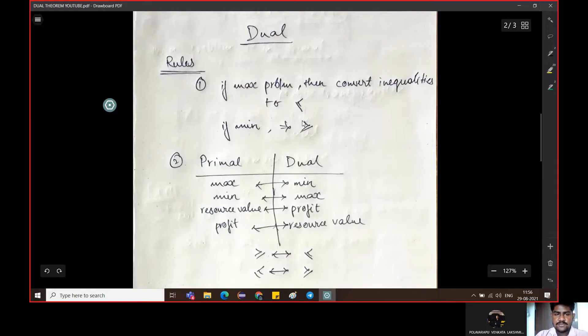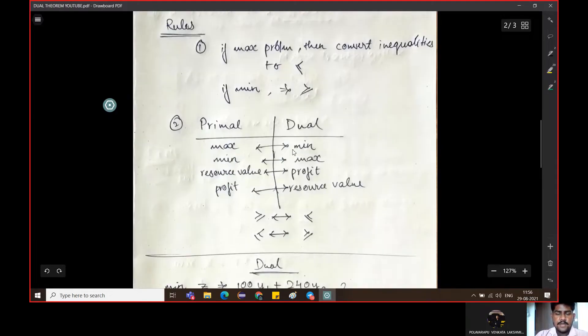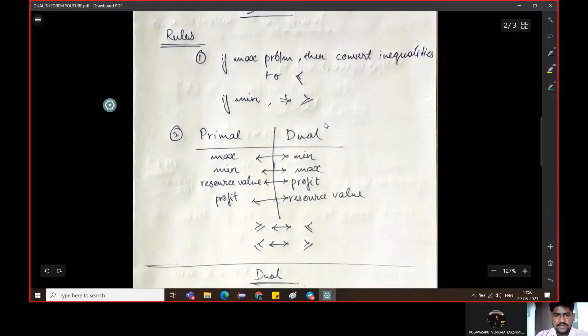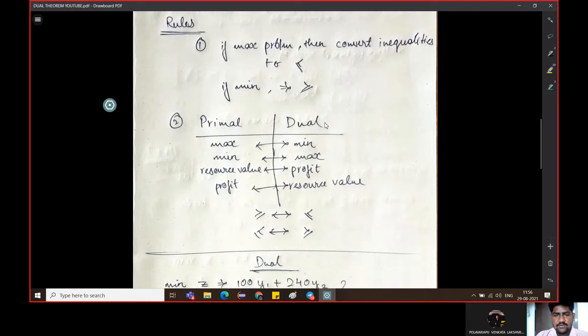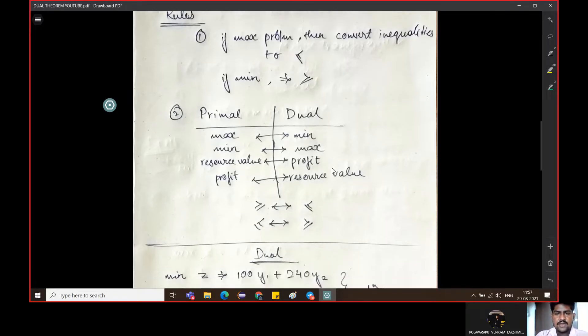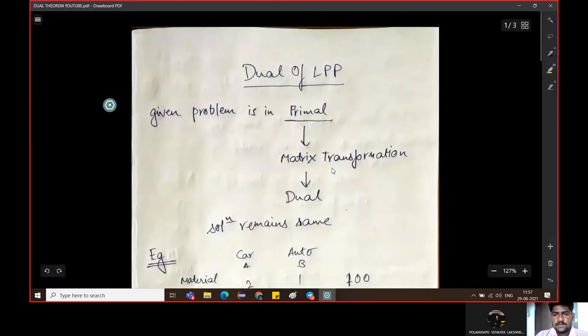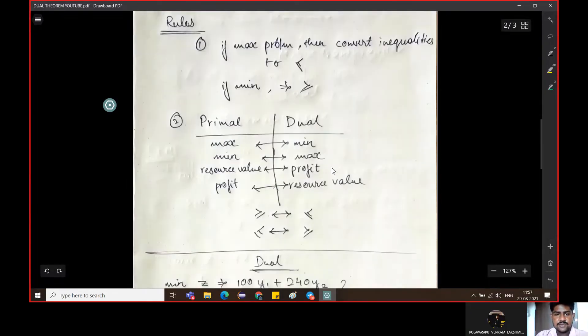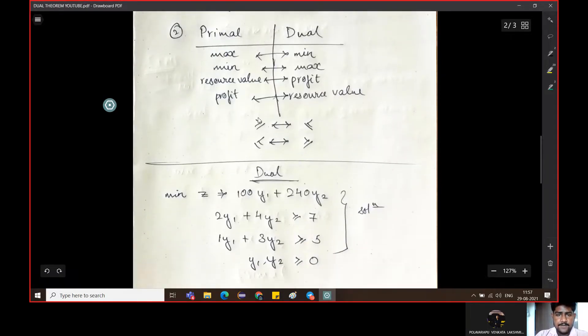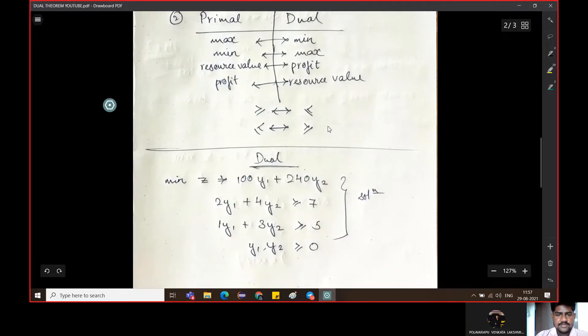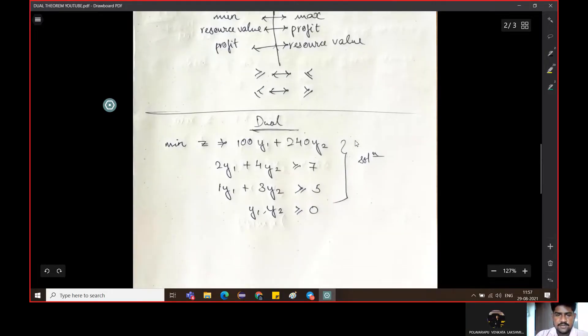If we are looking back, if we are using then convert the problem is to minimize, the problem is to maximize on the primal and minimum and maximum, and resource values will be changed to profit and profit will be changed to resource values. And then transpose into the matrix transformation and the same answer. Greater than equal to symbol will change to less than equal to and less than equal to will change to greater than equal to.